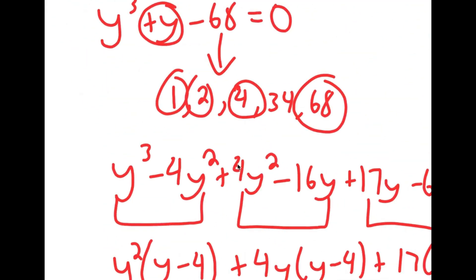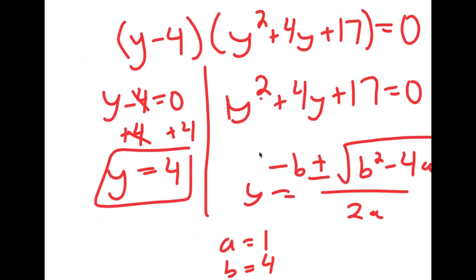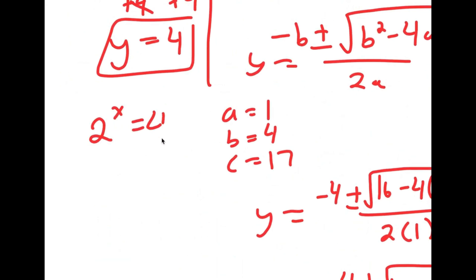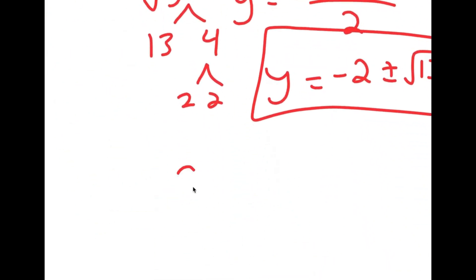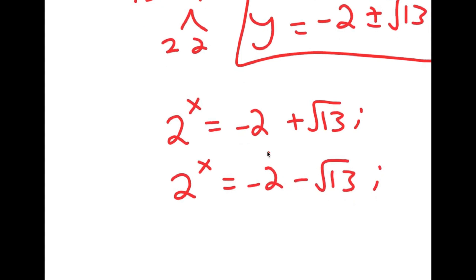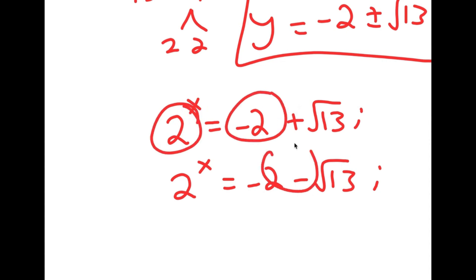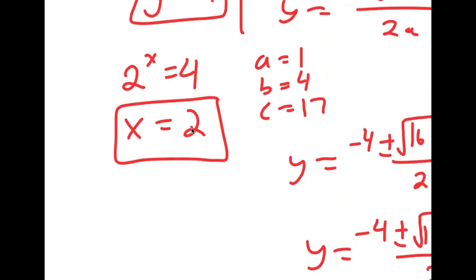Now, remembering that we let 2 to the power of x equal y: from y equals 4, we get 2 to the power of x equals 4, so x equals 2. That's one solution. From the complex values y equals negative 2 plus or minus root 13 i, we'd need 2 to the power of x to equal a negative number, which is impossible for a positive base. So there are no real solutions for those cases, and x equals 2 is my only solution to this problem.